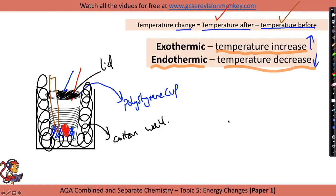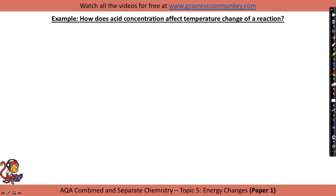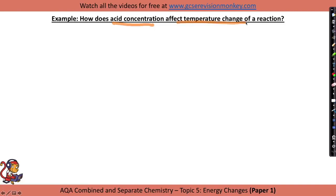In the exam you could just be asked to set up an experiment like this to determine whether a reaction is exothermic or endothermic, or you could be given a particular independent variable that you need to change — for example, the mass of one of the reactants, the concentration of one of the reactants, or something like that.